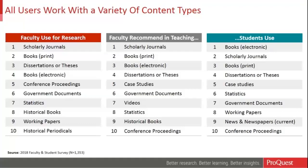In 2018 we ran a survey of about 1,300 faculty and students from across the world, asking what kind of content types they work with. We looked for differences between what faculty use and what they recommend in the classroom, and whether students heed those recommendations. What we found is that by and large students and faculty are using and relying upon the same materials. Faculty tend to prefer scholarly journals slightly over students, and faculty rely heavily on print books, whereas students have a stronger preference for electronic books.